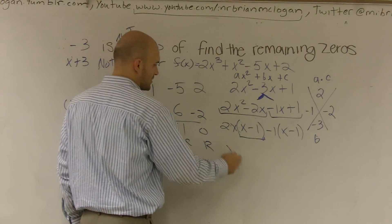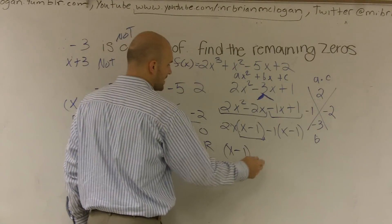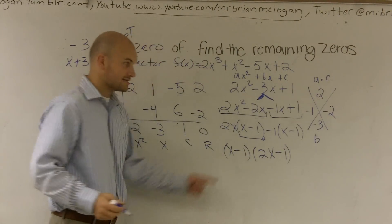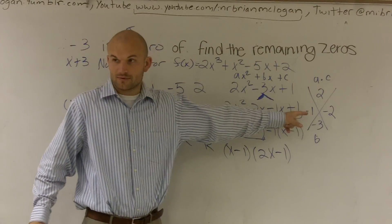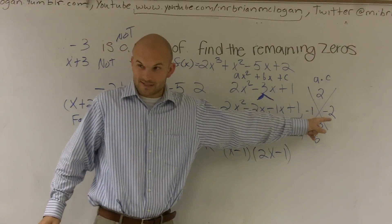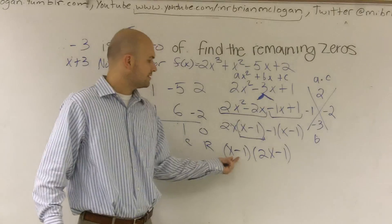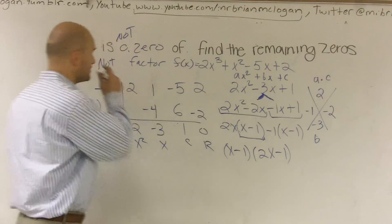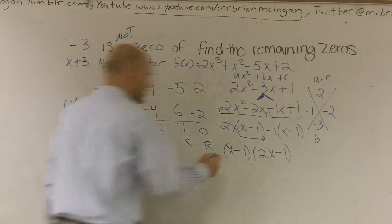So now I can factor out an x minus 1, and I'm left with 2x minus 1. So yes, if you would have said x minus 1 was a factor, and then x minus 2, that would have been wrong, because that's not your factor. It's 1 half of the factor. It's x minus 1, and 2x minus 1 is your factor.